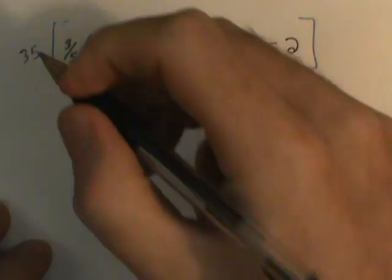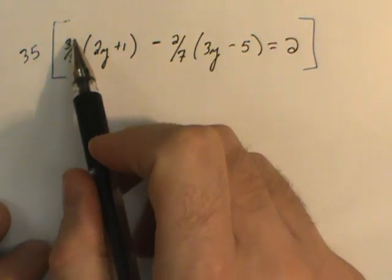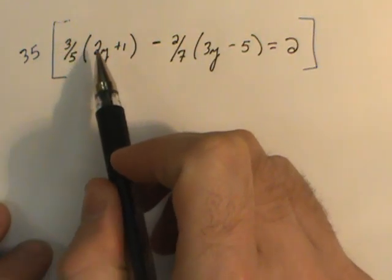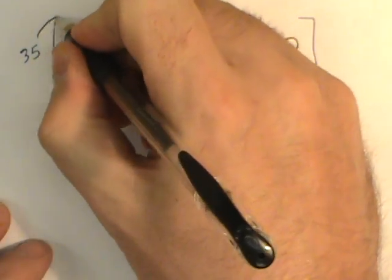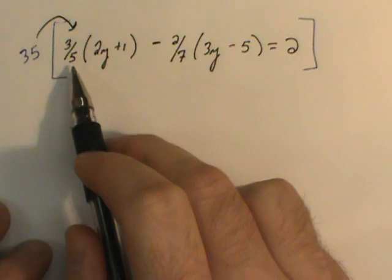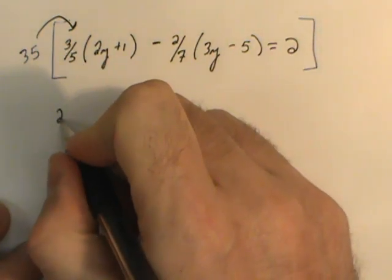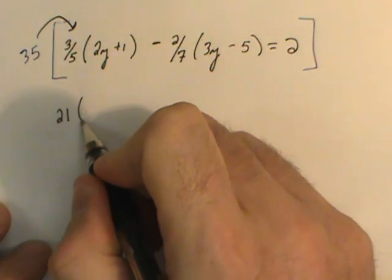As I distribute by the 35, I'm only worried about changing these fractions. Once I change the leading term, that will then change those parentheses in a later step. And so as I distribute here, 35 divided by 5 is 7, 7 times 3 is 21. I bring the 21 down. What's in parentheses is protected, so it's just rewritten.